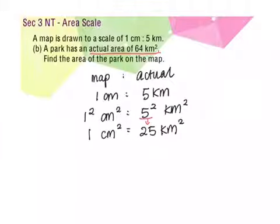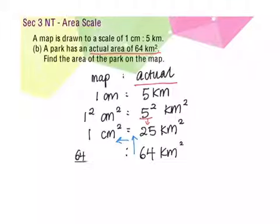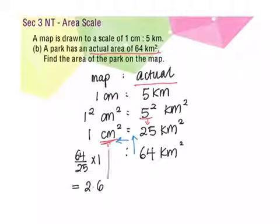The question says a park has an actual area, so we put it under the actual column — the area is 64 km². To find the map area, we take 64 over 25 times 1, which gives us 2.6 cm². So this is the area of the park on the map.